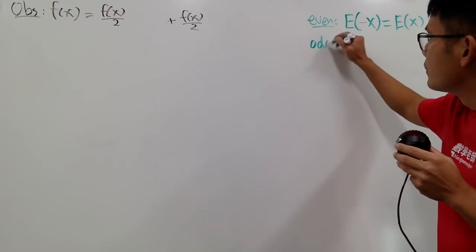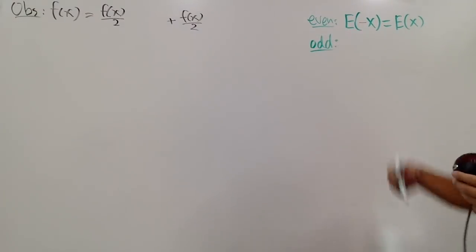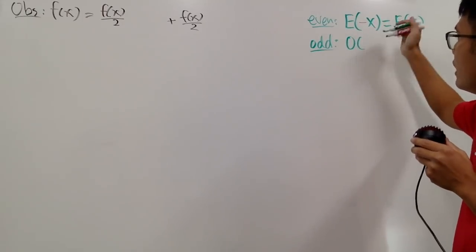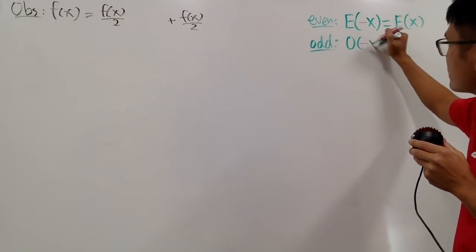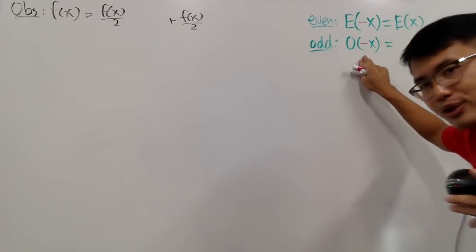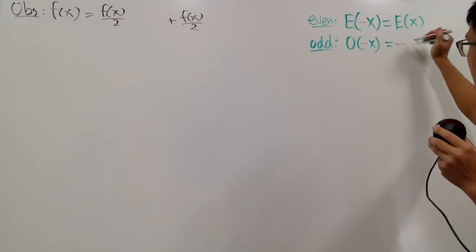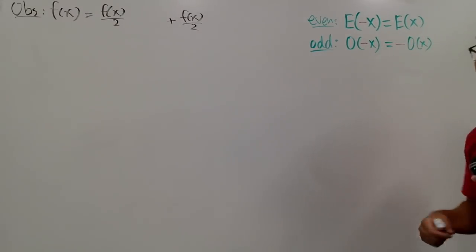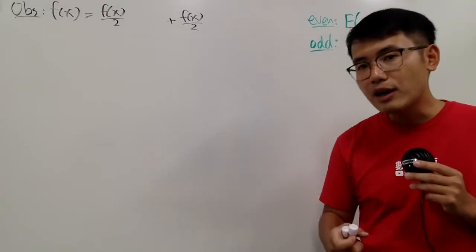Similarly, for the odd function, the check is pretty much the same. I will call this function capital O, and you plug in negative x as well. But in this case, you have to make sure that you can factor out the negative and you get negative O of x. If this happens, we can say that O is an odd function.